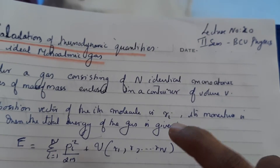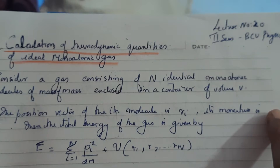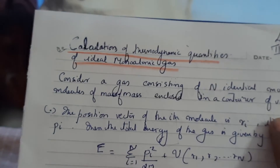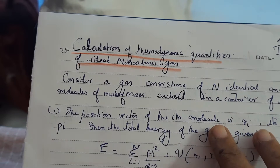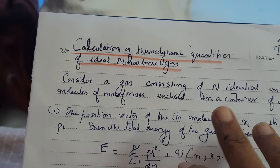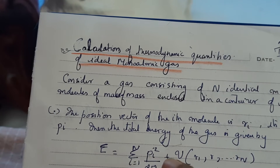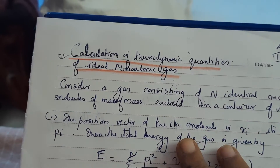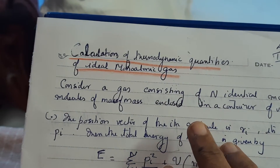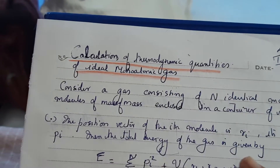Hello everyone. This is lecture number 20 according to your syllabus for second semester. Today we are going to see the calculation of thermodynamic quantities of an ideal monatomic gas. From the last lecture we already know that we are dealing with the partition function, and in this lecture we are going to see how, using the partition function, we calculate the thermodynamic quantities for an ideal monatomic gas.